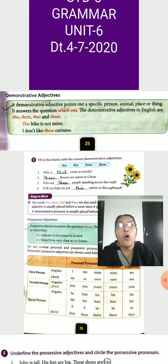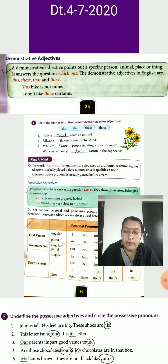Now, we go as per exercise E. Here also given options. So, we fill these blanks using this option. Why is that room so untidy? Second one: These flowers are native of China. Now, here they talk about flowers, plural. So, we use 'these'. Who are those people standing across the road? Fourth one: Will you help me put this carton in the cupboard? So, you understand that we use demonstrative adjective as per singular or plural.